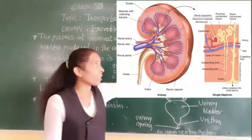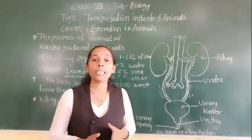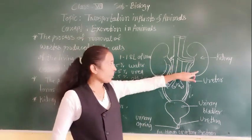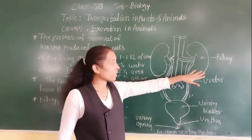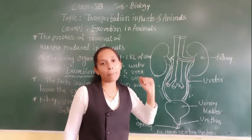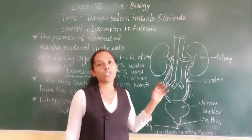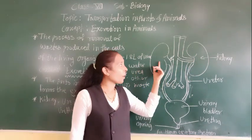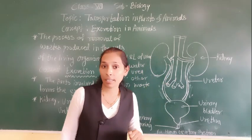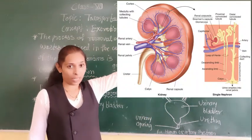The kidneys contain many nephrons. The kidneys are brick red in color and bean-shaped. Each kidney contains a large number of coiled tubes called nephrons. You can see in the image how exactly the nephrons appear.